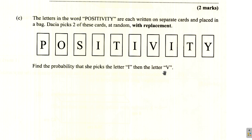Darcia picks two of those cards at random, with replacement. That means she picks one, then puts it back, then picks the other. So she replaces it. They say, find the probability that she picks the letter I and then V.